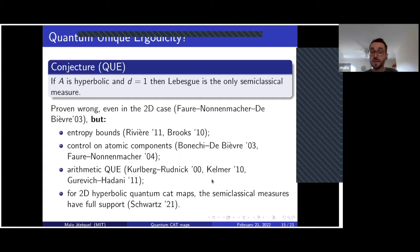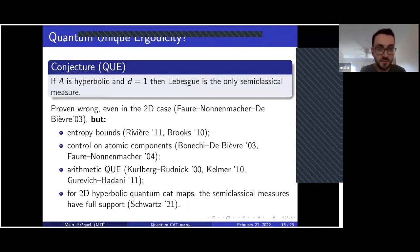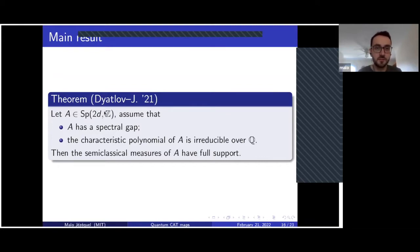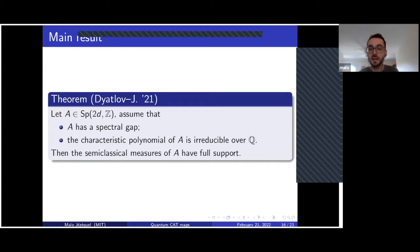The result of Nier-Schwartz is in the 2D case. The goal of our project with Semyon was to extend it to higher dimensions. The setting is always the same: a symplectic matrix on a 2d-dimensional torus, you don't assume hyperbolicity but you assume spectral gap, and you assume that the characteristic polynomial of A is irreducible over the rationals. With these two assumptions, you get that every semi-classical measure of A has full support.